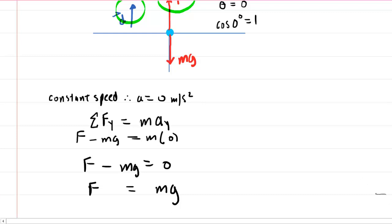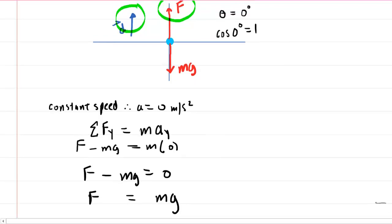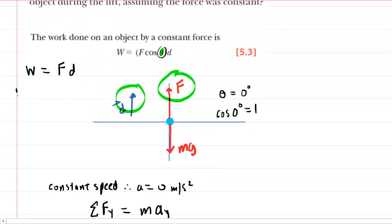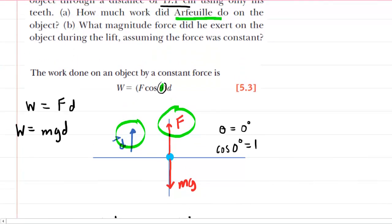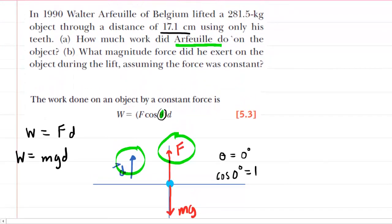We can go back up to the work equation and plug in mg for that force that the individual is exerting. So this becomes mgd, and then we just have to plug in the known values. The mass of the object was given as that value right there, so we'll punch that in. The standard unit is kilograms, so that's perfectly acceptable. The gravitational constant on Earth is 9.8 meters per second squared.